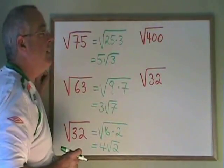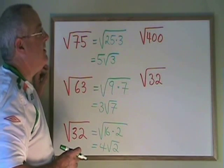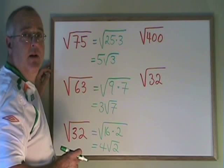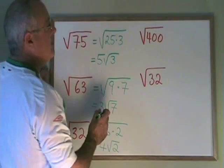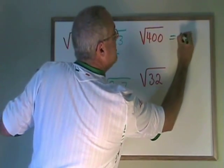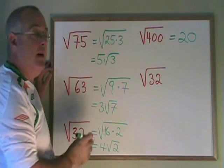Here we have the square root of 400. And this is a bit of a trick question. Because the largest factor of 400 that is a square is 400 itself. 400 is 20 squared. So the square root of 400 is just equal to 20. And we don't need a radical in that final answer.